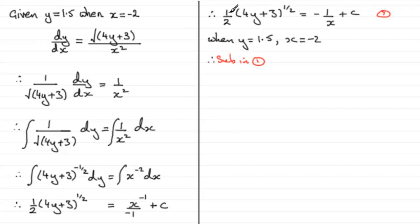So we have 3 over 2. And if we substitute minus 2 in for x, we've got minus 1 over minus 2 which is going to be a half, plus that constant c. So if we take half from both sides, it follows that c equals 1. Now we've got that, we can sub back into 1 again.